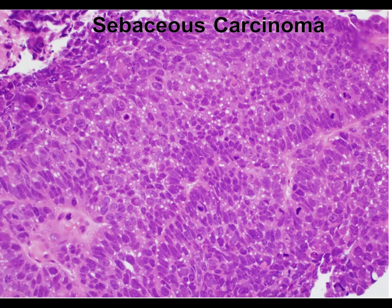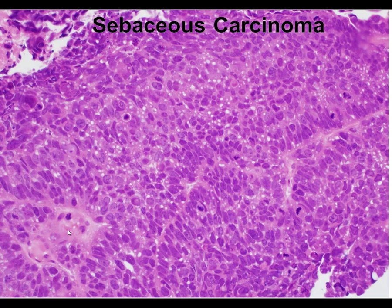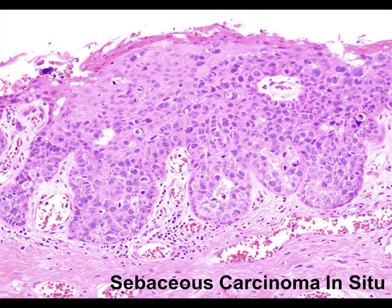Here we have another example — look at the angulated nuclei. Dr. Kazakov always taught me that whenever you see a poorly differentiated tumor around the eye with angulated nuclei, that should prompt you to think about sebaceous carcinoma. Remember, sebaceous carcinoma can involve the overlying epithelium or epidermis. With a shave biopsy around the eye this can be confused with squamous cell carcinoma in situ — things to look for are the presence of vacuolated cytoplasm and the lack of complete full-thickness atypia.